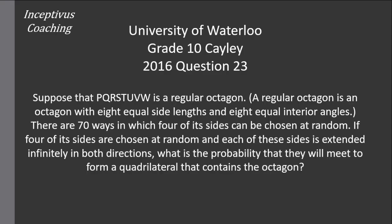It reads that suppose you have a regular octagon, meaning all sides and angles are the same. There are 70 or 8 choose 4 ways in which 4 of its sides can be chosen at random. But if 4 of its sides are chosen at random and each of these sides extended indefinitely in both directions, what is the probability that they will meet to form a quadrilateral that contains the octagon?